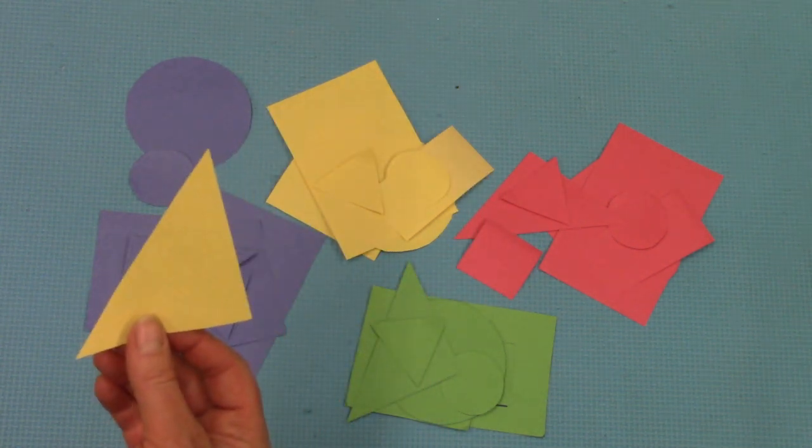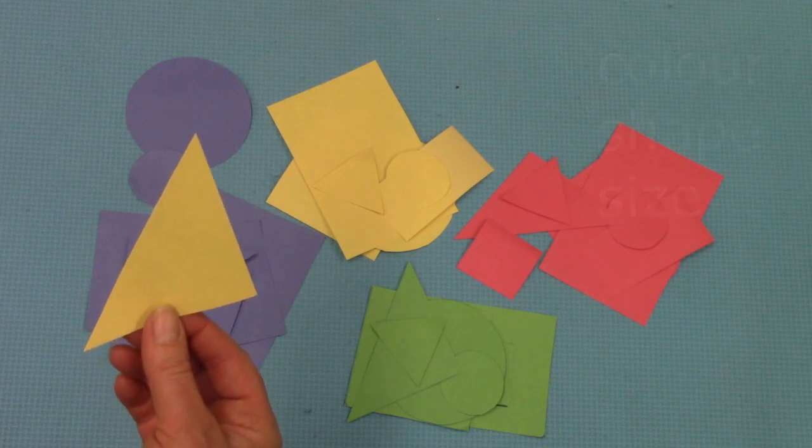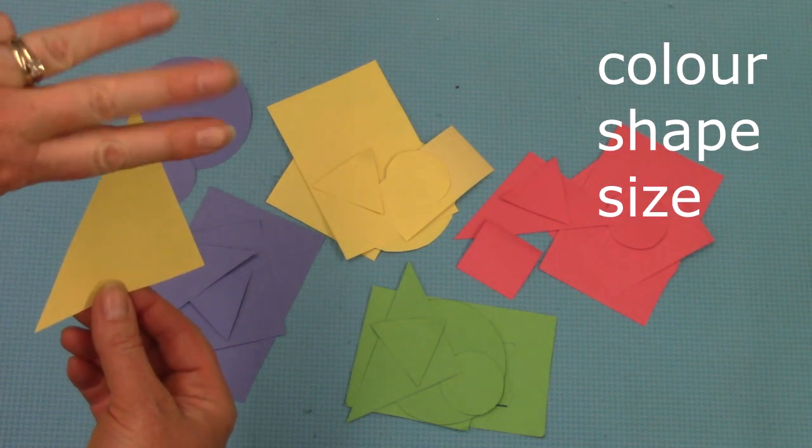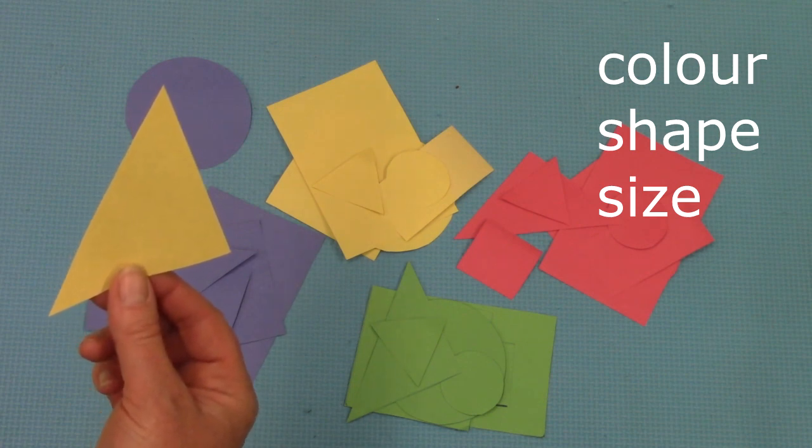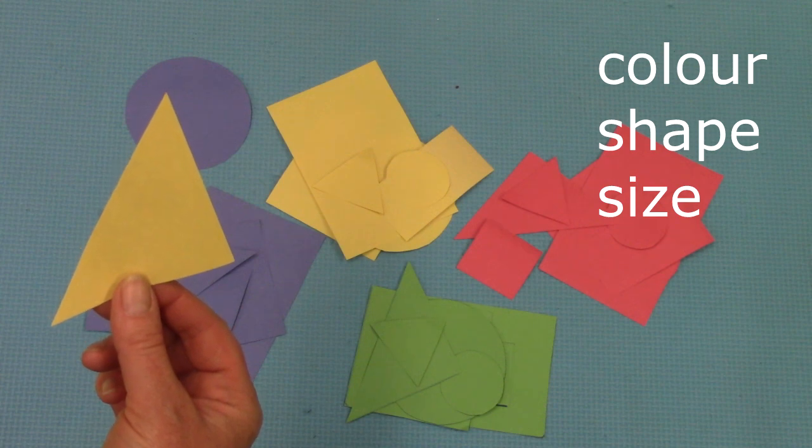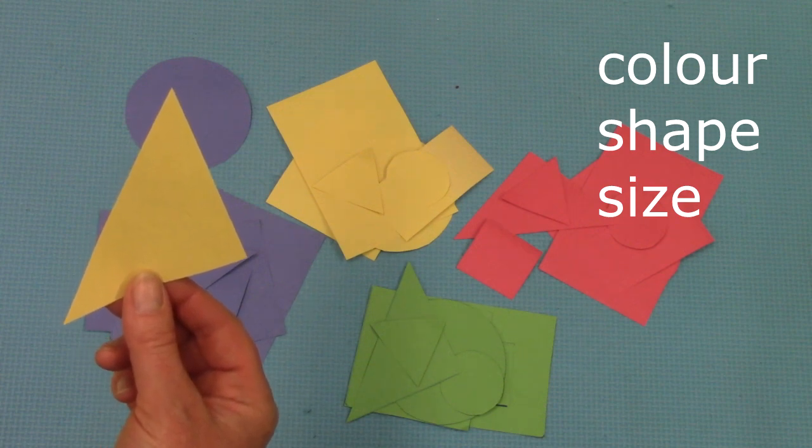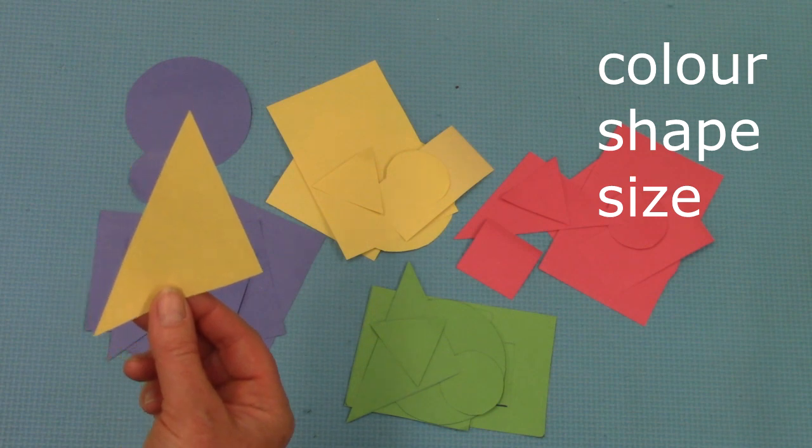Let's take a look at this shape. Can you tell me three things about it? What is its color? Yes, it's yellow. What is its shape? Triangle. And what is its size? Large.